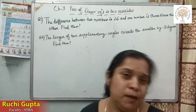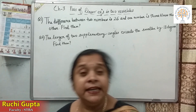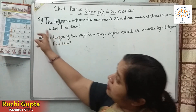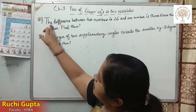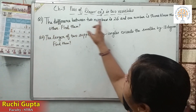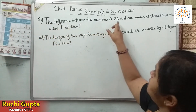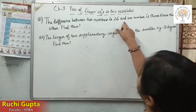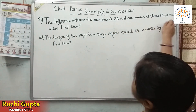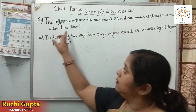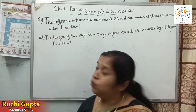Today I am taking some word problems from our NCERT book. The first question is: the difference between two numbers is 26 and one number is 3 times the other. We have to find the two numbers.